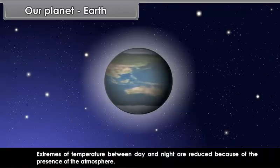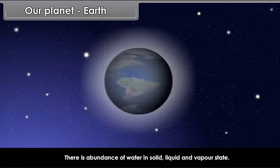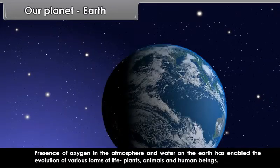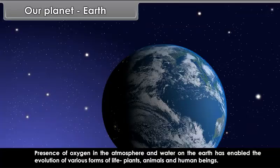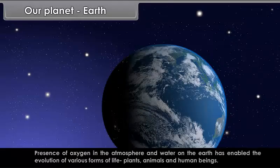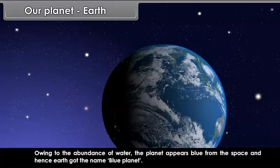There is abundance of water in solid, liquid and vapor state. The presence of oxygen in the atmosphere and water on the Earth has enabled the evolution of various forms of life, plants, animals and human beings. Owing to the abundance of water, the planet appears blue from the space. And hence, Earth got the name Blue Planet.